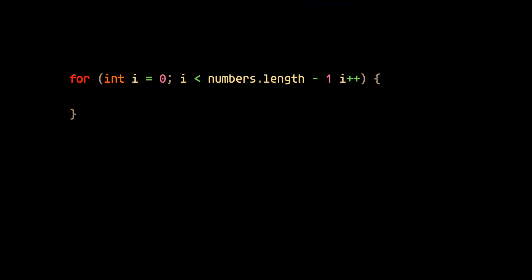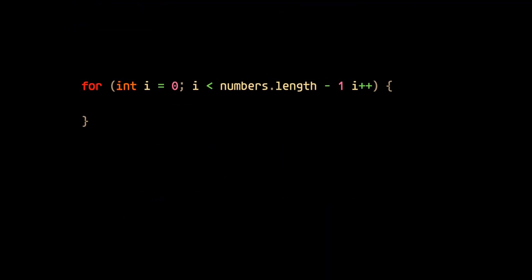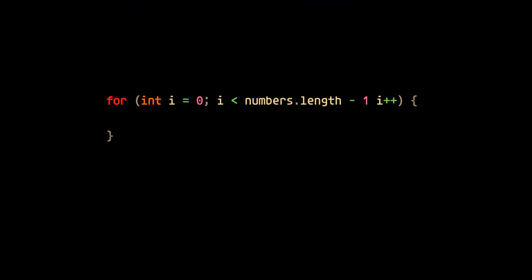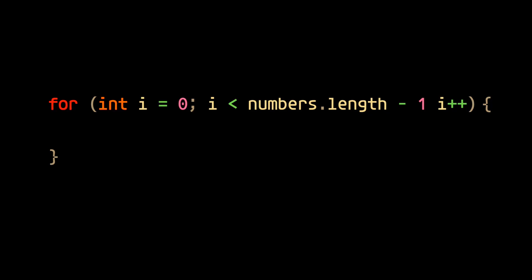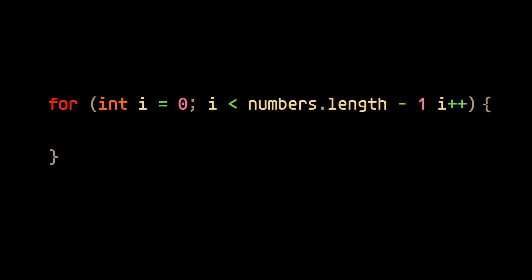Now this next one is notorious, and admittedly, even as an experienced developer, I find myself making this mistake more than I'd like to admit. This code, as it stands currently, won't compile because we're missing a semicolon before the i++ in this for loop.